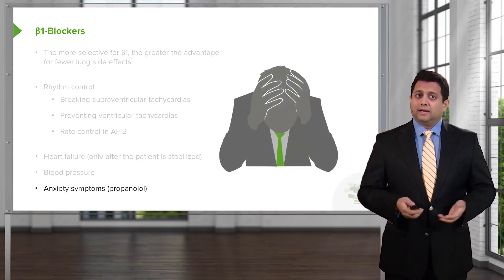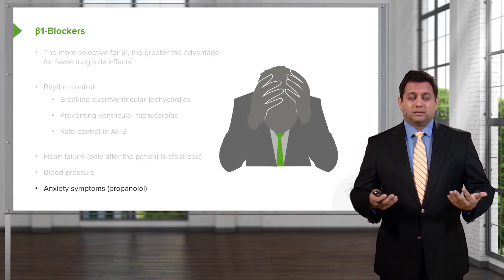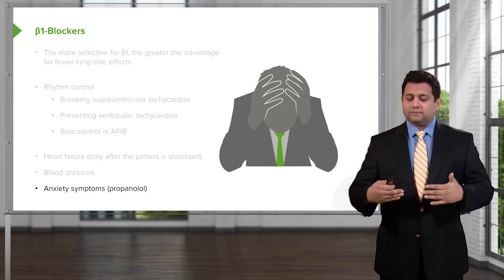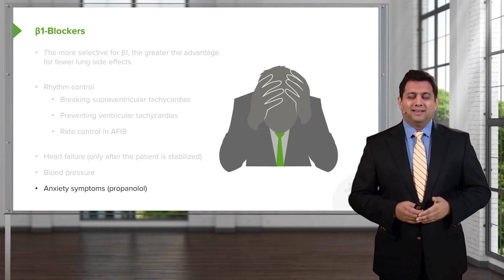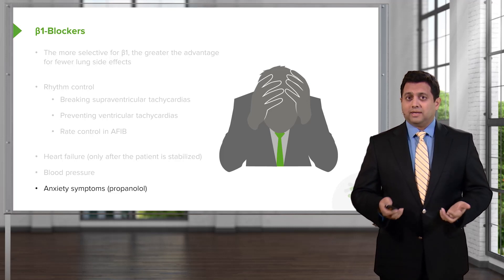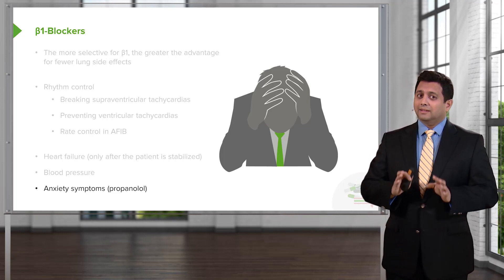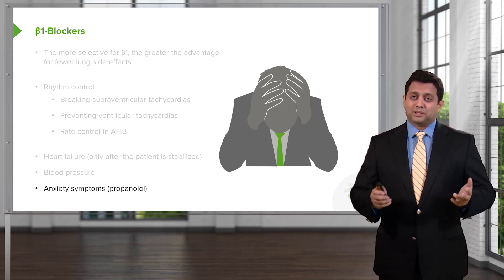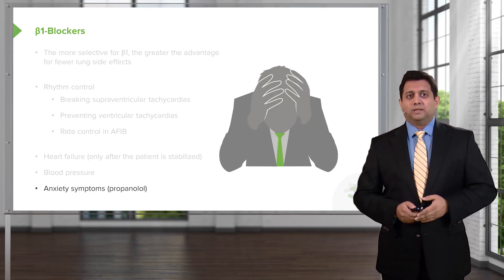Interestingly, we can use propranolol for anxiety. It was one of the first beta blockers, and we discovered that people who get stage fright would take propranolol to calm down that thumping heart sensation — and people did quite well. I still use this in practice. As a fun secret: if you take propranolol before a lie detector test, it's possible you'll pass without getting in trouble. But don't tell the FBI I said that.